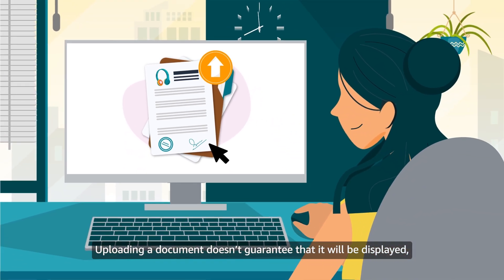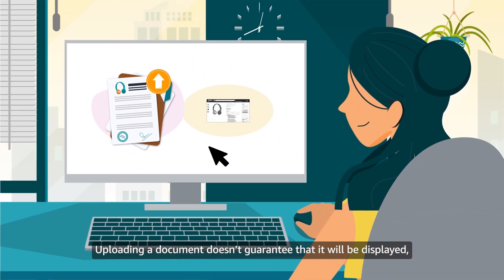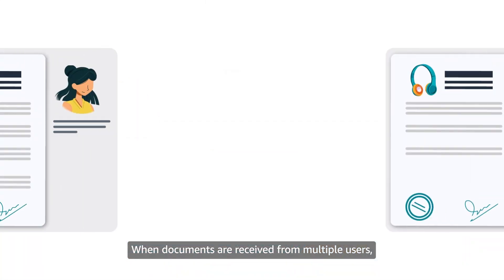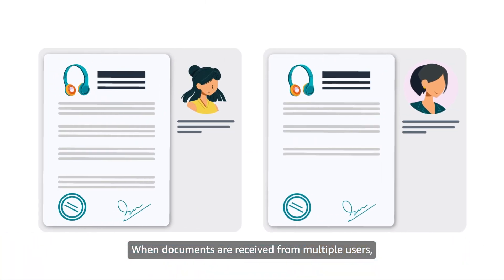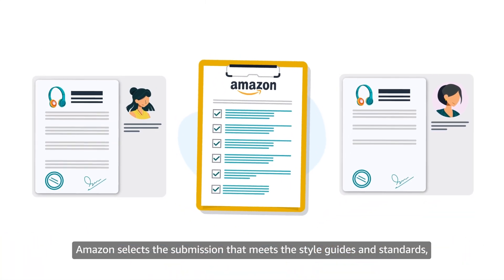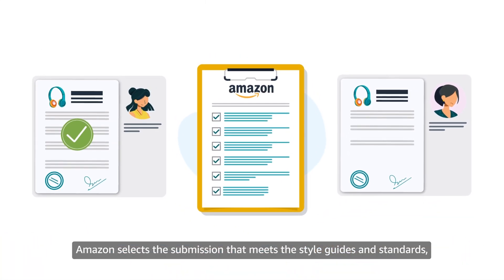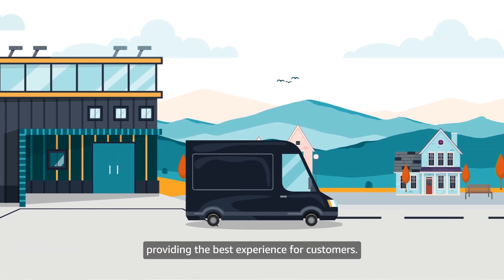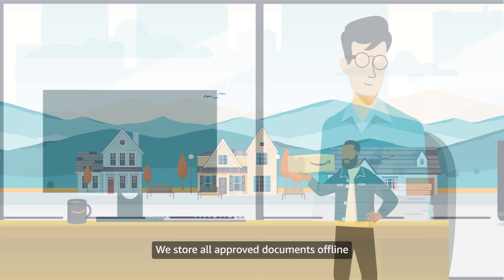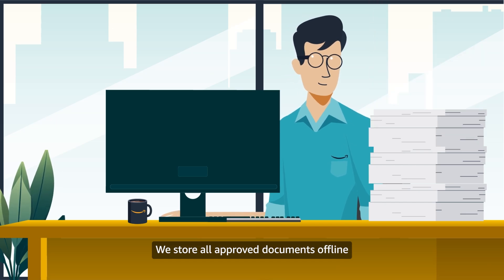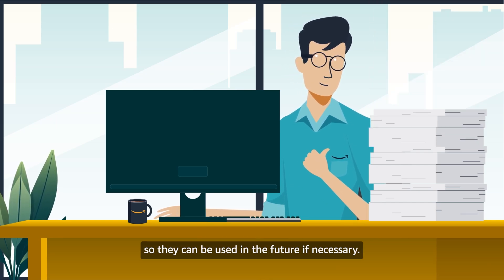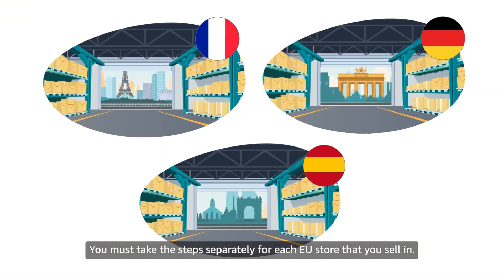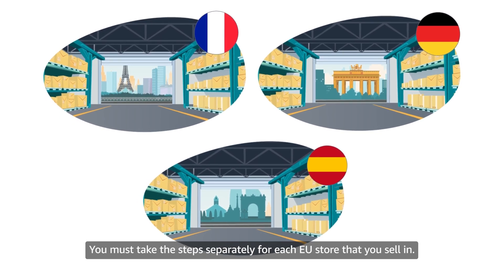Uploading a document doesn't guarantee that it will be displayed even if it is approved. When documents are received from multiple users, Amazon selects the submission that meets the style guides and standards, providing the best experience for customers. We store all approved documents offline so they can be used in the future if necessary. You must take the steps separately for each EU store that you sell in.